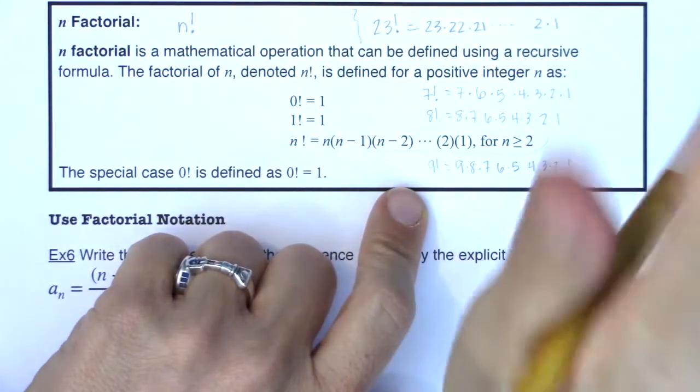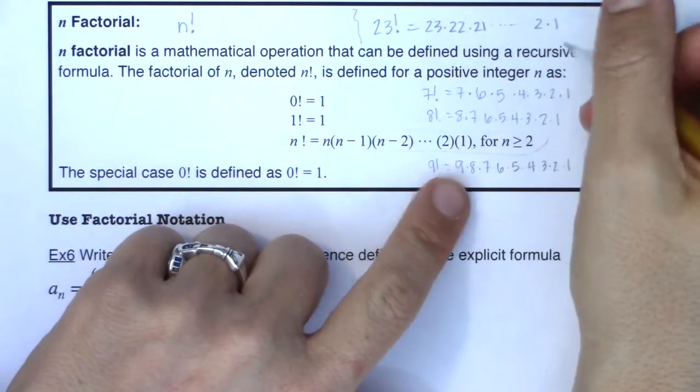You can imagine if I gave you nine factorial, it'd be nine times eight times seven times six times five times four times three times two times one. So to go back to my 10th grade days, what should I have done to get that extra credit? It should have been 23 times 22 times 21, all the way down to two times one. I did okay in Algebra 2. And I did learn something.